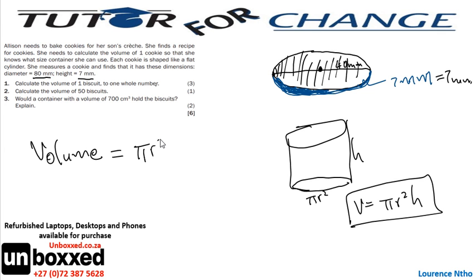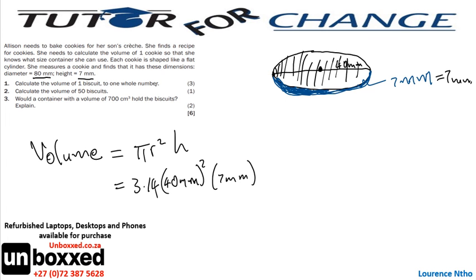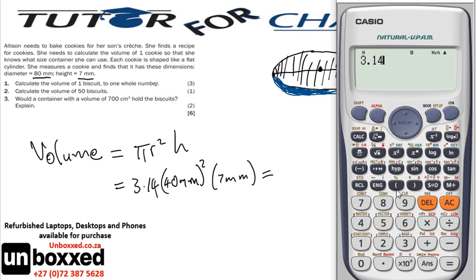We can now calculate the volume. Pi is approximately 3.14, the radius is 40, and the height is 7. So we calculate: 3.14 × 40² × 7, which gives us 35,168.